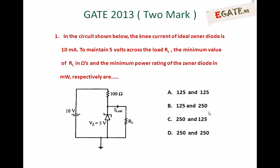The first 2-mark question is related to the Zener voltage regulator circuit. In the given circuit, the knee current of the ideal Zener diode is 10 mA. To maintain 5V across the load RL, find the minimum value of RL in ohms and minimum power rating of the Zener diode in milliwatts respectively.